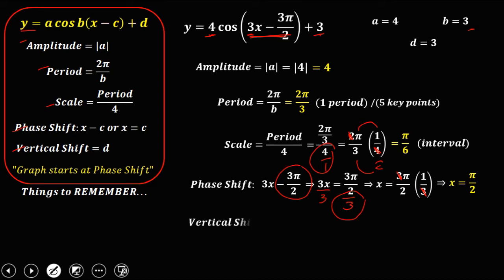For the vertical shift, that's d, which is equal to 3, so therefore the vertical shift is positive 3. Since it's positive 3, that means the graph shifts up 3.